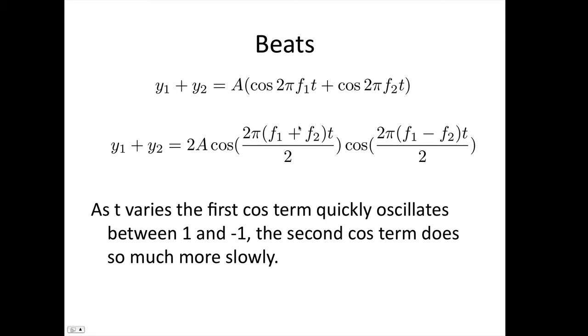Now this is a big number. So as t changes, this cos function oscillates between 1 and -1 relatively rapidly. f₁ - f₂, on the other hand, for beats we choose to be a relatively small number. We choose f₁ and f₂ as very similar, so this part of the cos function is oscillating very slowly between 1 and -1.